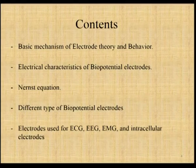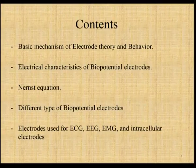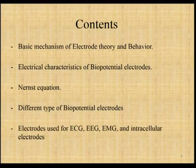Then the electrical characteristics of biopotential electrodes — what characteristics are given by the electrodes during biopotential measurement. Next, the Nernst equation, which deals with the electrode-electrolyte interface. Then different types of biopotential electrodes: micro electrodes, skin surface electrodes, and needle electrodes. Finally, the electrodes used for various recording systems — ECG, EEG, EMG — and intracellular electrodes.